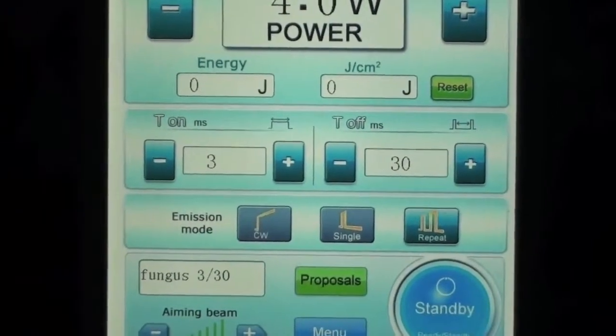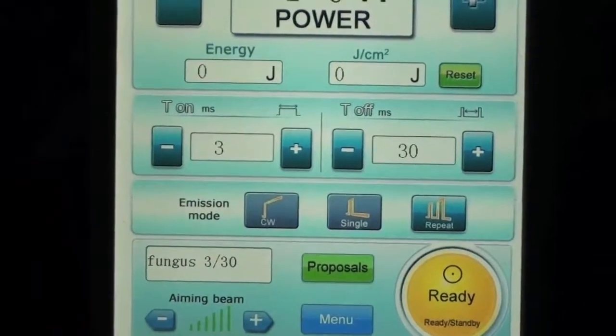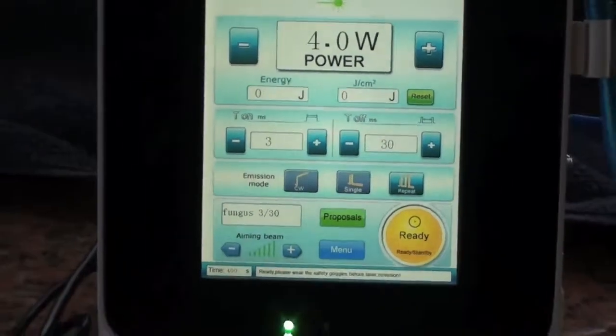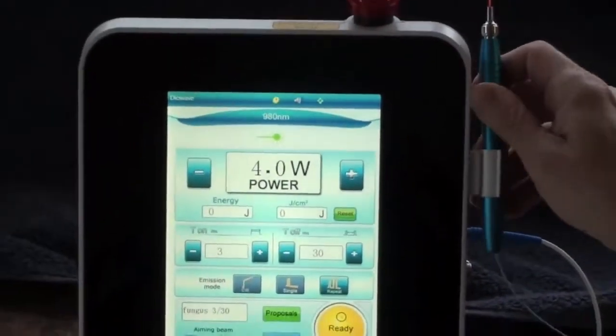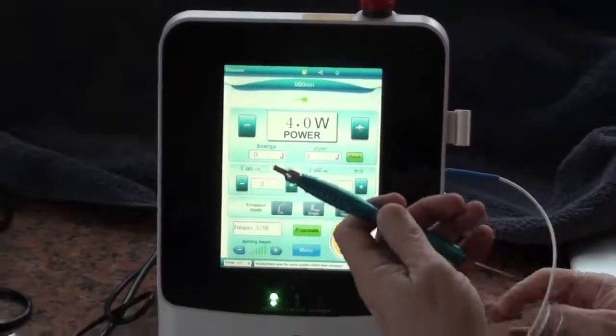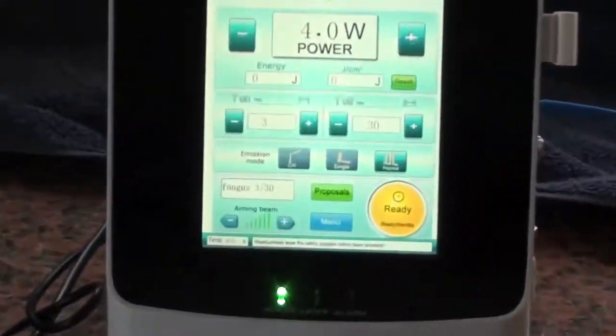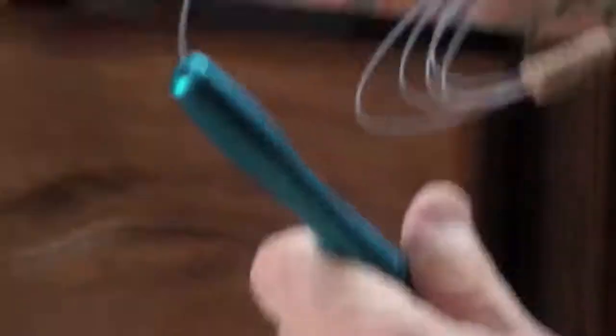If you want to use it, you turn it on ready. That will turn it on. You lift up the foot pedal. In this case, we're using the hand piece. This happens to be a 400 micron and there's the beam that's on. If you want to start it, you just press. It should press it down.